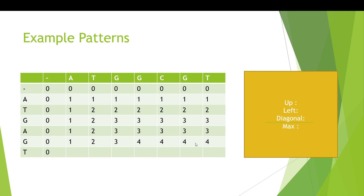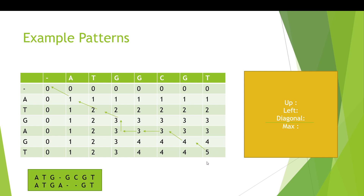Continuing down the next row: for one cell G against T from the diagonal gives two (minus one penalty); from the left a dash against T remains four; from above it's three. So the max is four from the left. In the final row, for the last cell: coming from the left, a dash against T remains four; coming from above, T against a dash is also four; coming from the diagonal, T against T gives four plus one equals five. So you end up with five in the final cell.